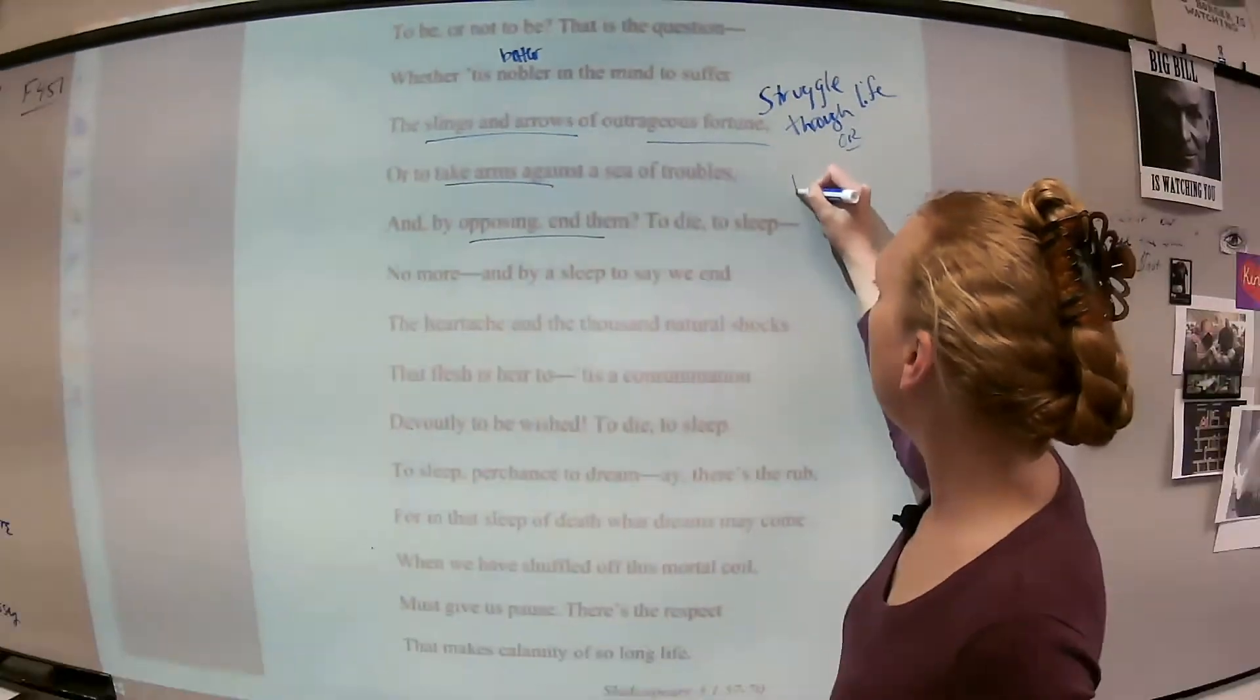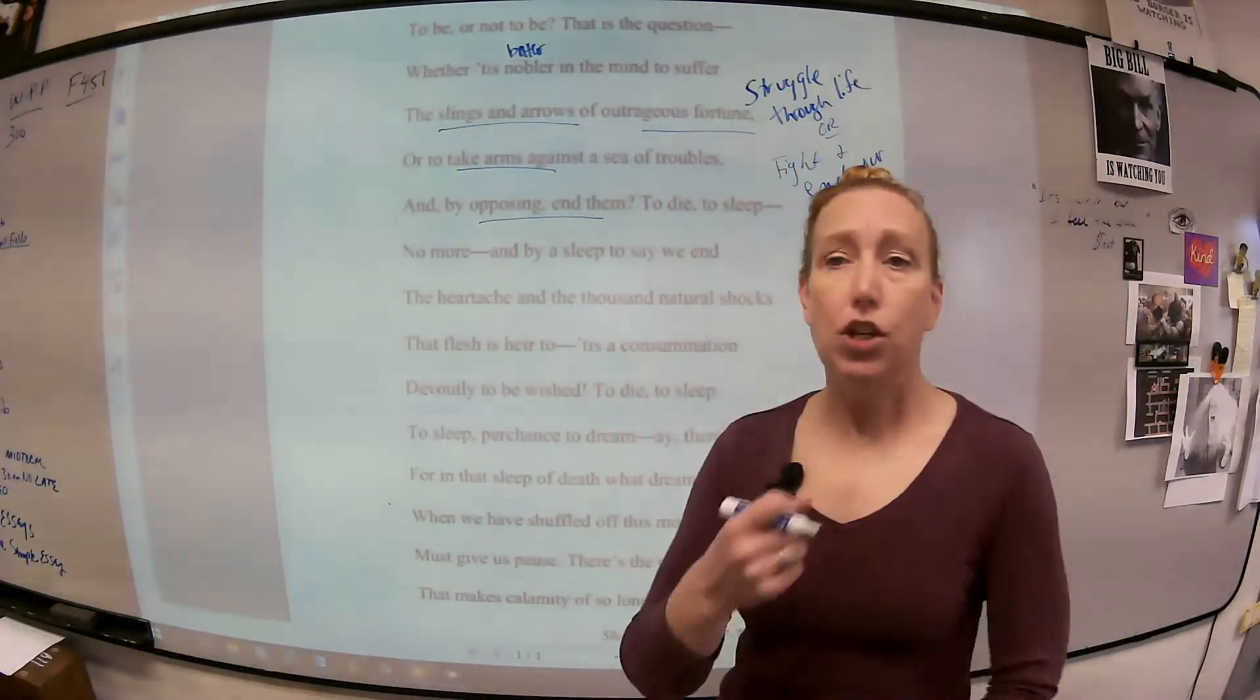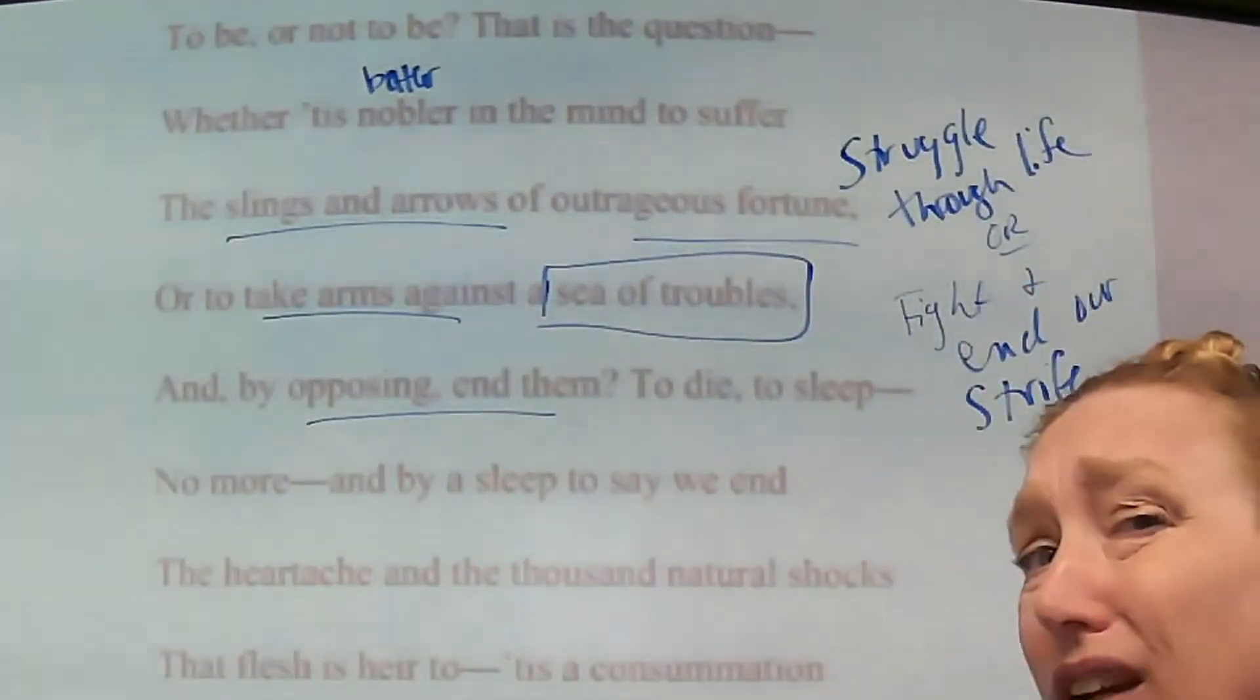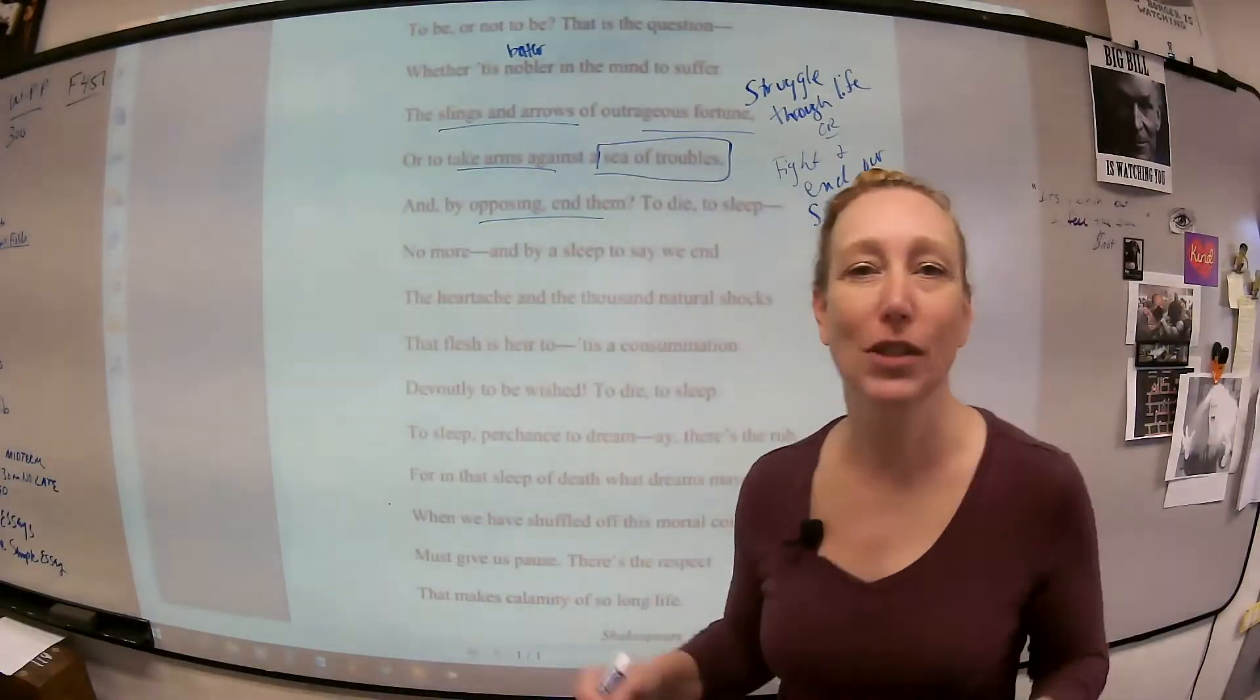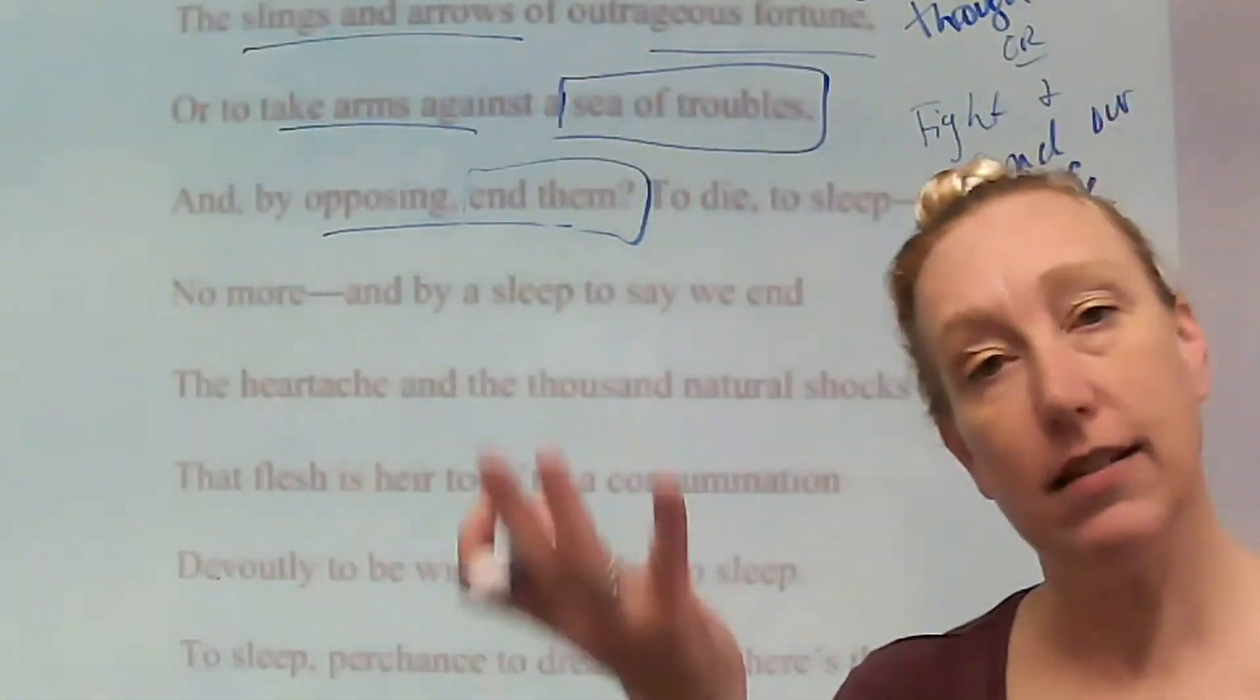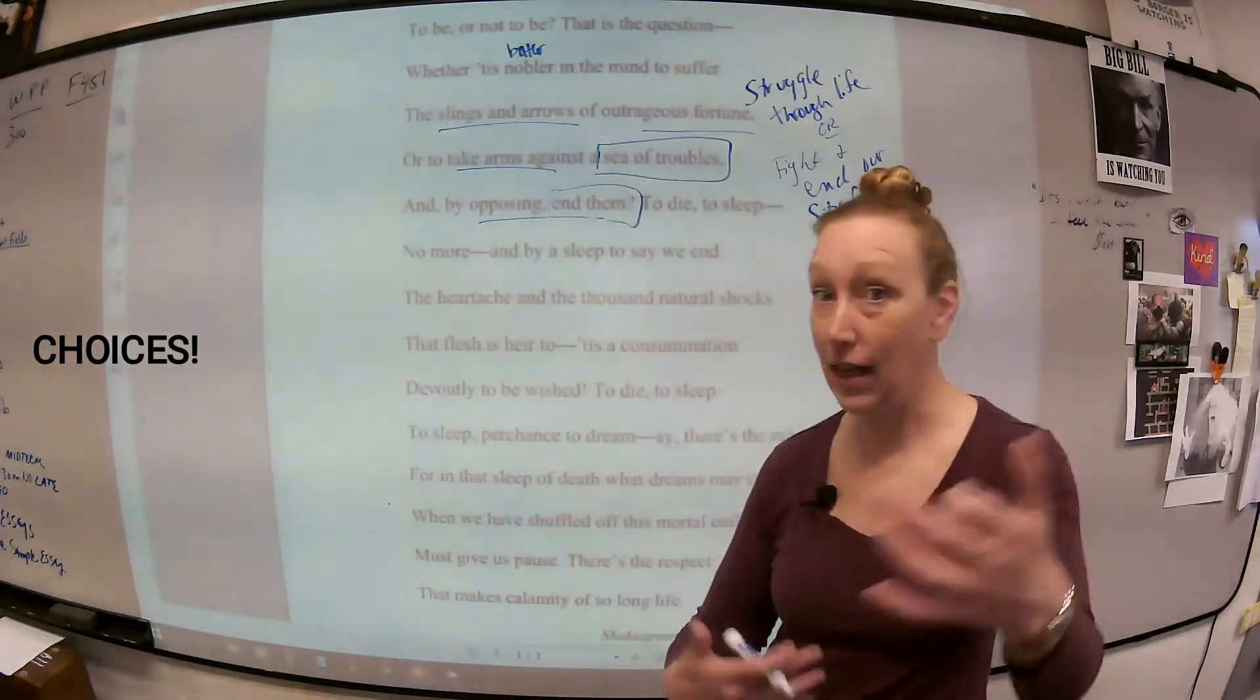Or do we fight and end our strife and our struggles? Which do we do in life? Do you just sit there and passively take all that life throws at you? Or do you stand up and fight? What I like is this image of a sea of trouble. I don't know if any of you have ever punched the ocean. I have because I'm a total dork. But punching the ocean doesn't really do much to the ocean. The waves just keep coming. It's a whole soliloquy of either-ors, to live or to die, to struggle or to fight. All of these kinds of choices that we can make. And I'm always telling you guys and gals, everything's about choices.